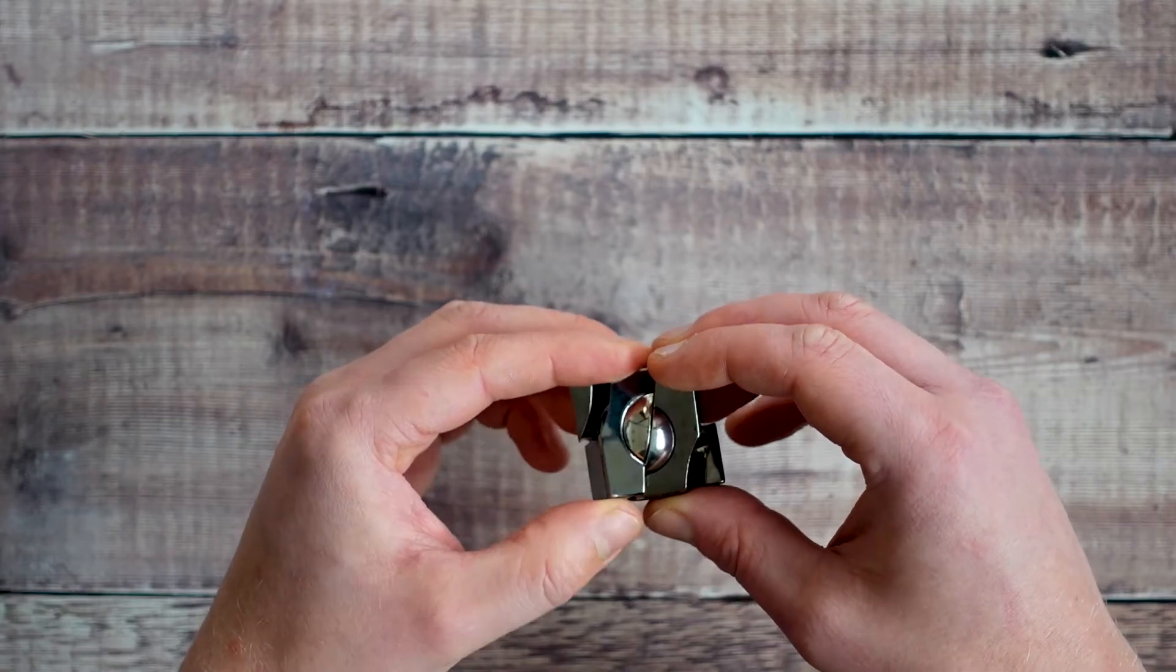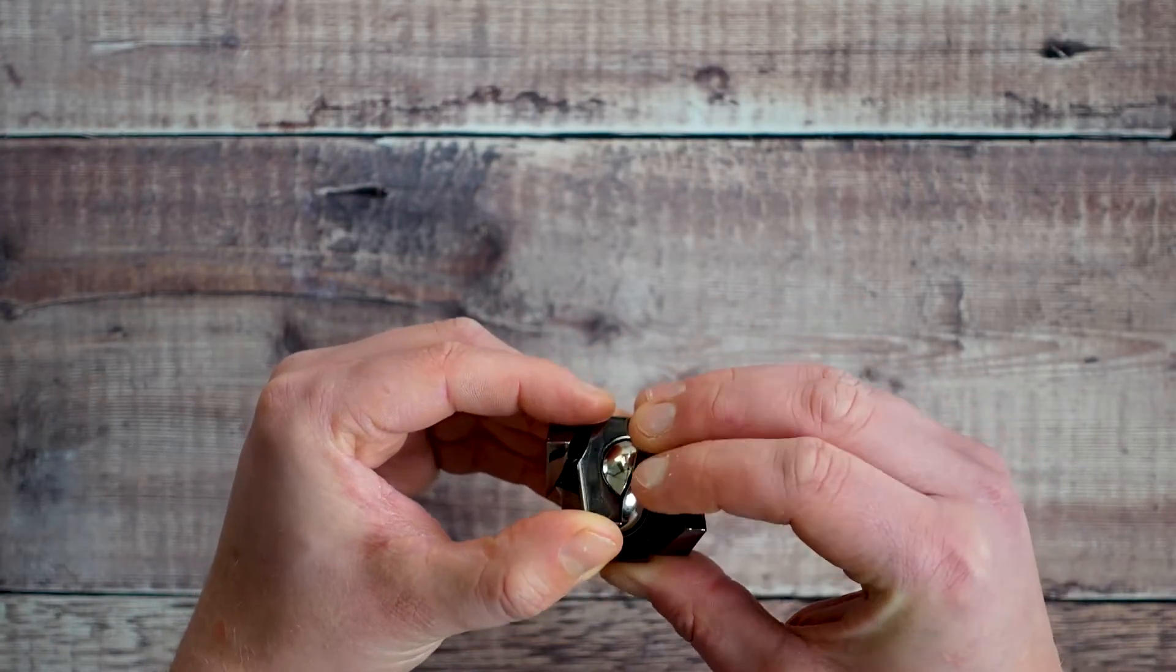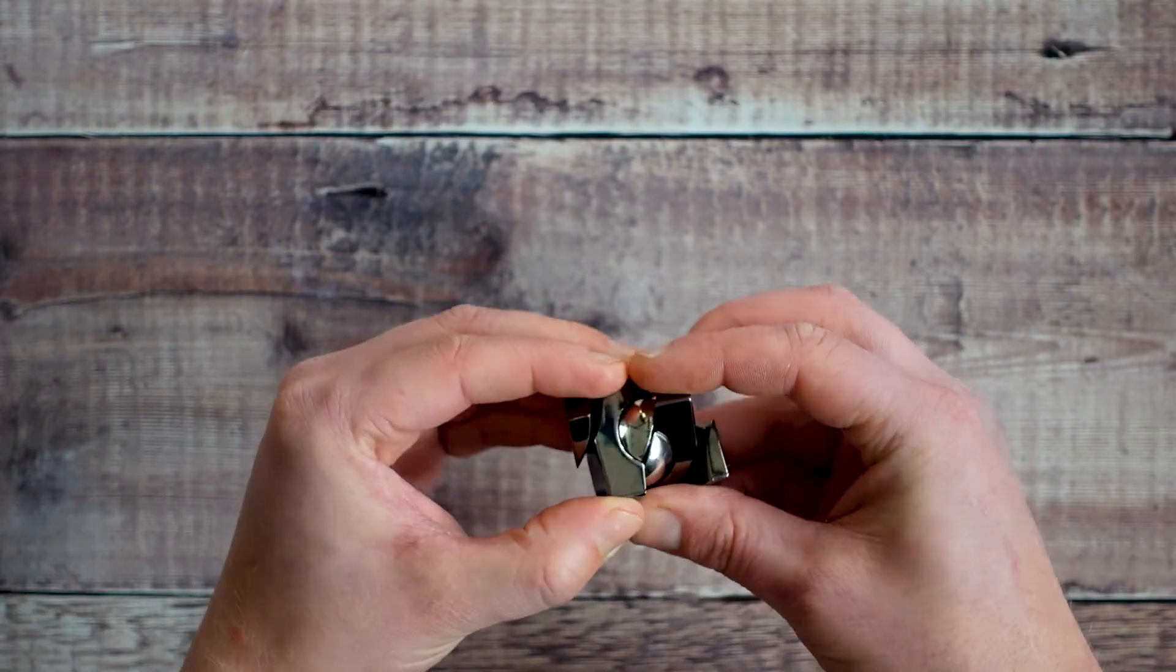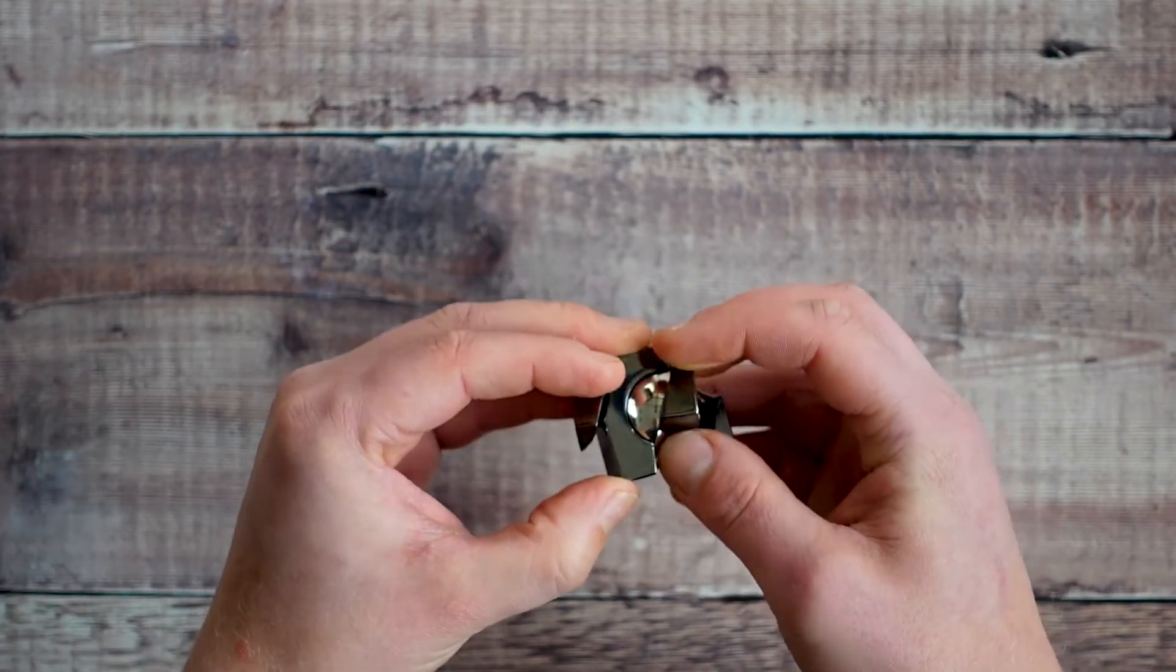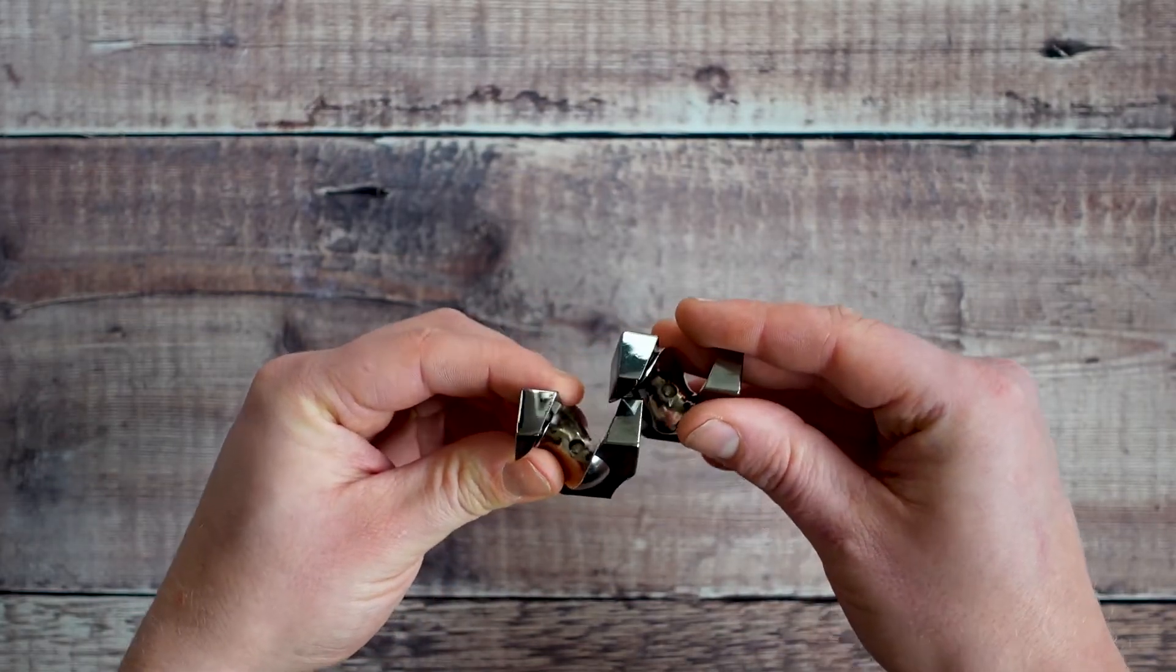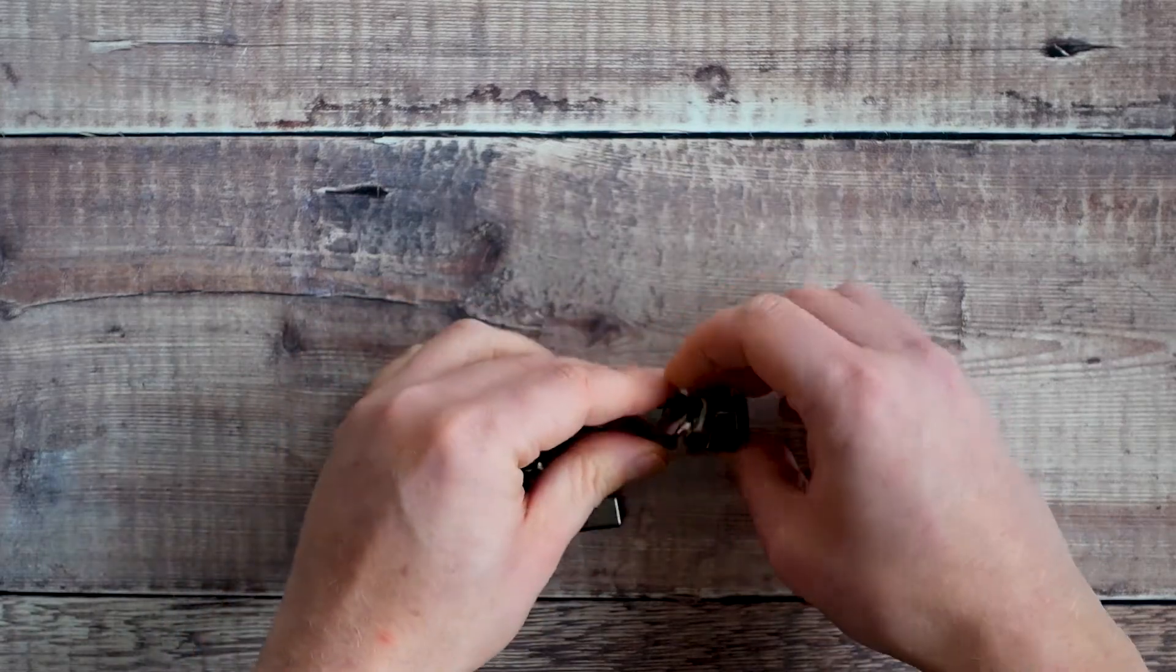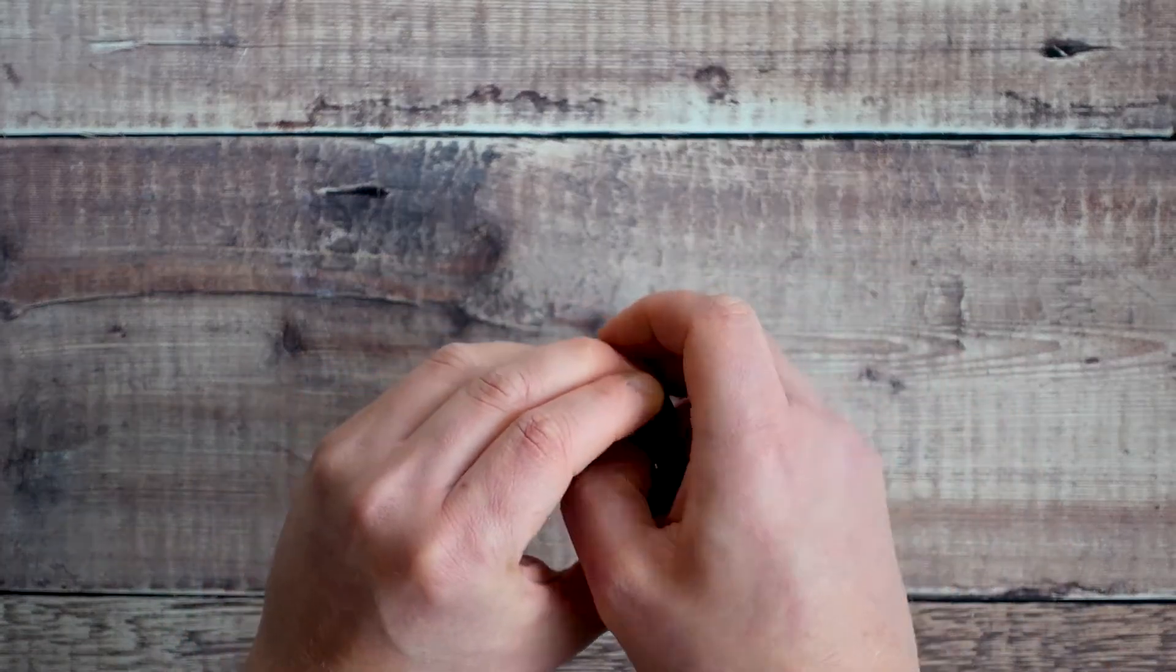So you can see I'm twisting these pieces, and as you spin it, it's not lined up quite perfectly. The two pieces spin and come apart, and then you've got the four separate pieces that make up the puzzle.